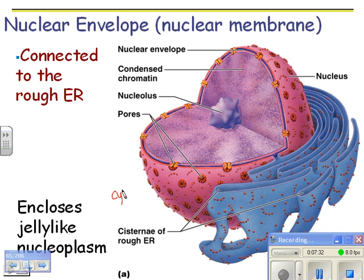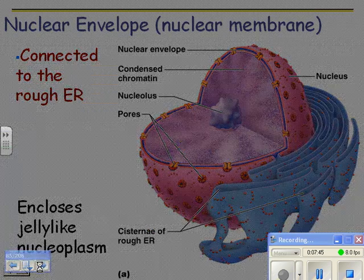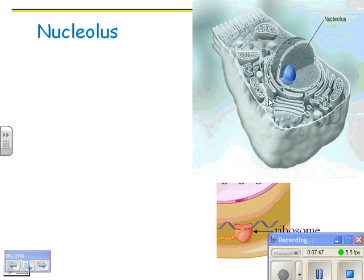The cytosol — the goop that's in the cell — has a special name when it's inside the nucleus: the nucleoplasm. The nucleolus is the structure inside the nucleus. Here's the nucleus with the nucleolus inside, and it's responsible for making ribosomes.